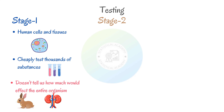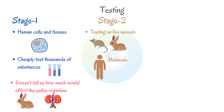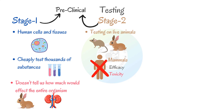If the substance looks promising, we can move on to the next stage, which is testing on live animals. For example, in the UK all drugs must be tested on two different types of live mammals, like mice and rabbits. As humans are also mammals, our bodies are going to be quite similar to these, and so this stage can give us a pretty good idea about the efficacy and toxicity of the substances. We can class these first two stages as preclinical because they don't involve any humans.